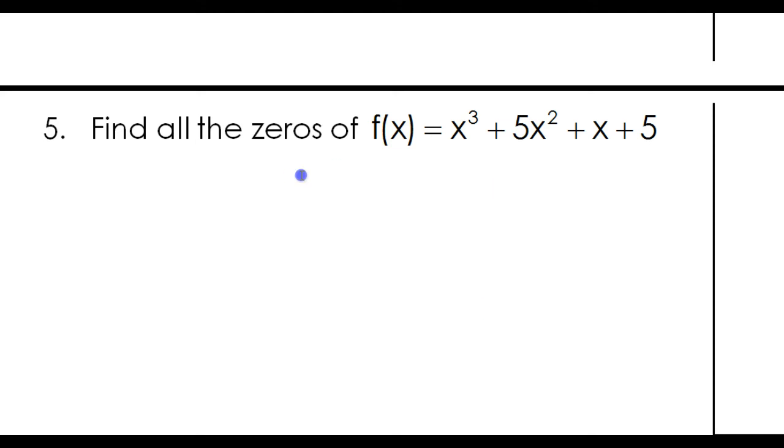So one of the ways that we can find those x-intercepts is by factoring, if it's factorable. Now when I see four terms, the first thing I think about is grouping,